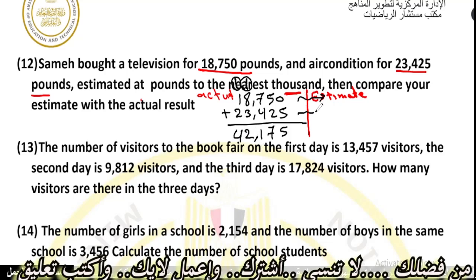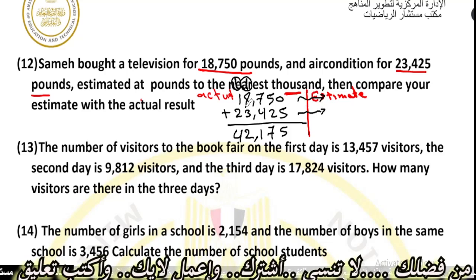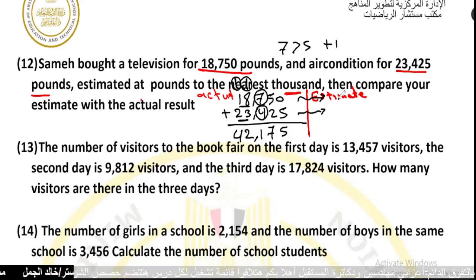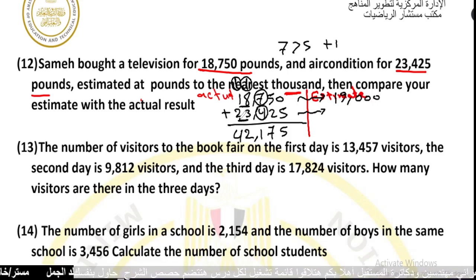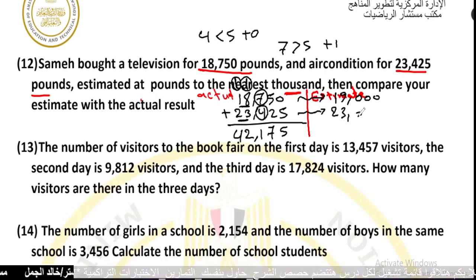Now round each number to the nearest thousand. For 18,750: the thousands digit is 8; the next digit 7 is greater than 5, so add 1 — 18 becomes 19, giving 19,000. For 23,425: the next digit 4 is less than 5, so add nothing — it stays 23,000.